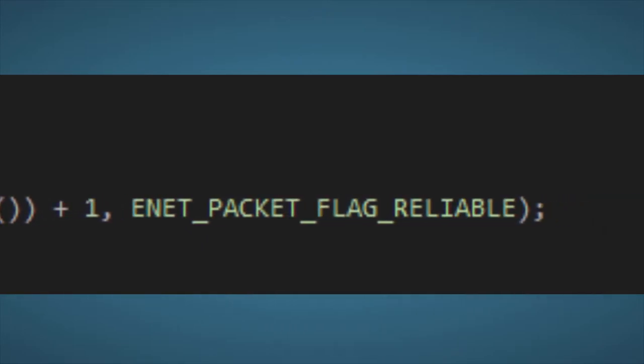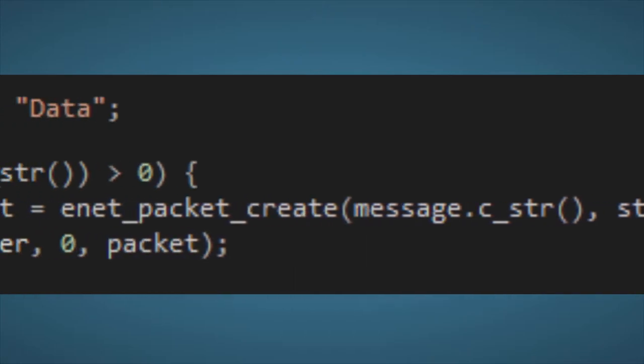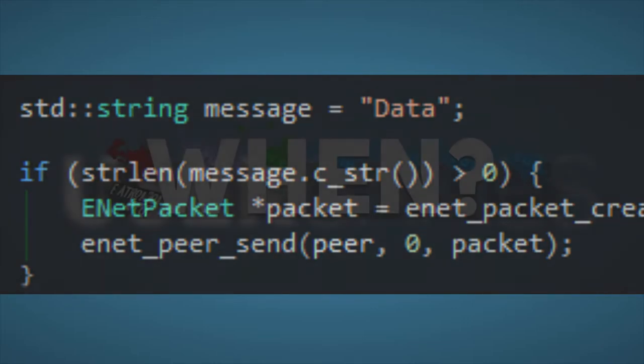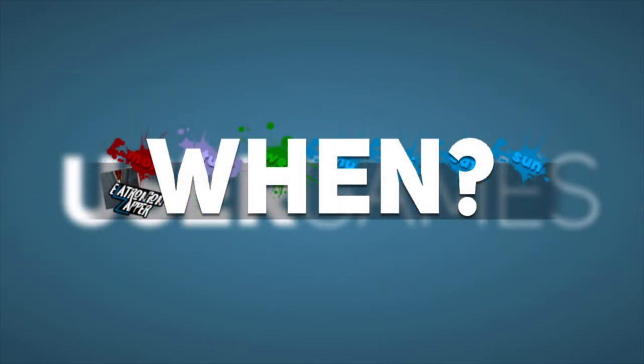I use EnetPacketFlagReliable because I want to be assured that the data is received. This isn't TCP — it still is UDP, but it is still pretty reliable. Then after, we use the method EnetPierSend to send our packet to the peer. The first parameter is the peer, the second one I don't know so I put in zero, and the last one is the packet that we just created. But when should we send this packet?